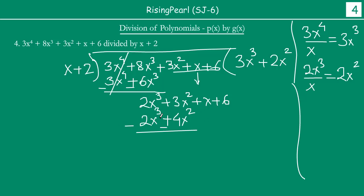Let's subtract this. So this term will get cancelled out. Now 3x square minus 4x square will give you minus x square. Plus x plus 6 will come down.